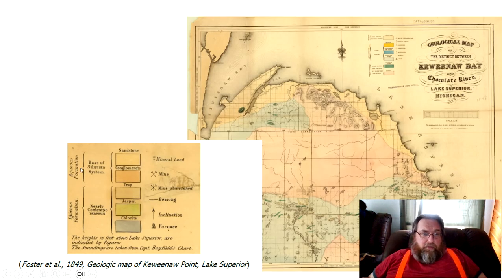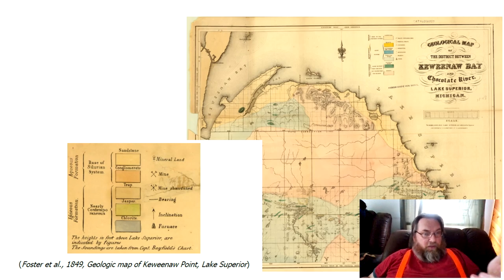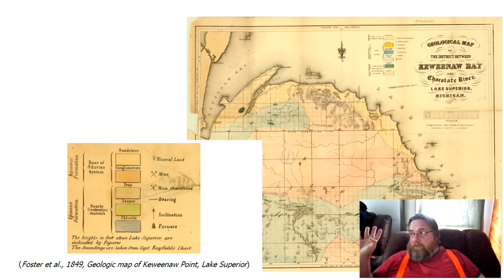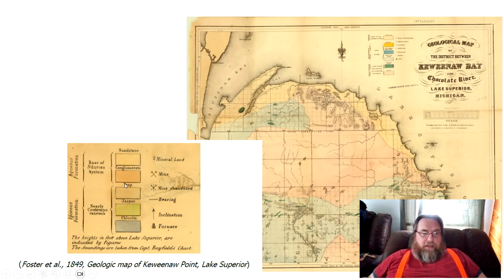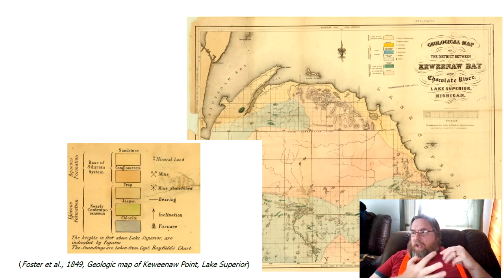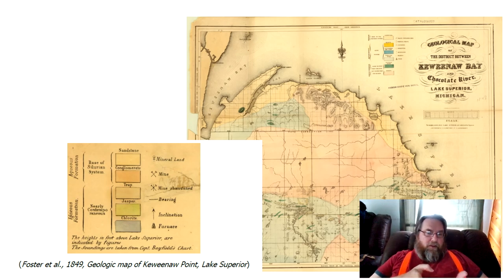Here you see 'base of Silurian system, aqueous formation' — formation didn't mean what it means today in lithological classification; it just meant a package of rocks. 'An igneous formation, nearly contemporaneous' — at this time they had no idea how old the earth was. We wouldn't really know until the early 20th century.